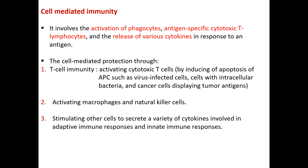Although antigen-presenting cells just present the bacteria to other kinds of cells to give activation, the cytotoxic T-cells cause the inducing of death of those cells that hold the bacteria inside in order to give them enough protection. That's why it's called cytotoxic — it's kind of toxic to those antigen-presented cells. For example: virus-impacted cells, cells with intracellular bacteria as we said, cancer cells, and cells displaying abnormal antigens. In addition to those, T-cell immunity can also activate macrophages and natural killer cells, stimulating other cells to secrete a variety of cytokines, involving adaptive immunity responses and innate immune responses, specifically activation of different kinds of T-helper subtypes.